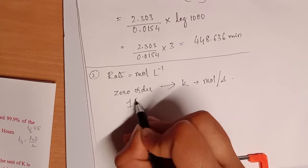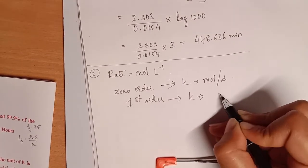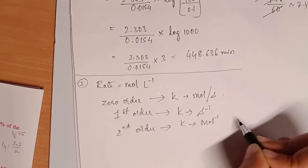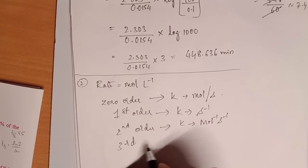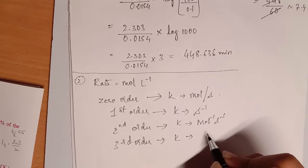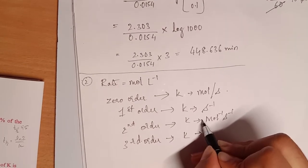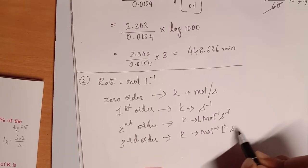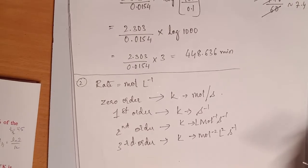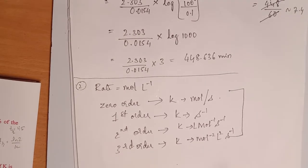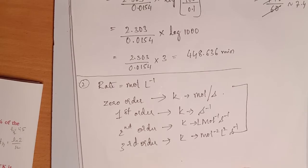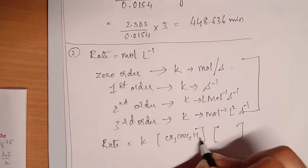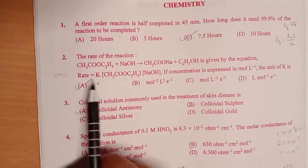We know that for a zero order reaction, the rate constant K has units mole liter inverse second inverse. For first order it is second inverse. For second order it is mole inverse liter second inverse. For third order it is mole inverse squared liter squared second inverse. I want you all to memorize these units as it will help you avoid wasting time figuring out the order. Rate equals K times concentration.